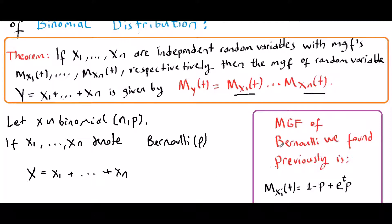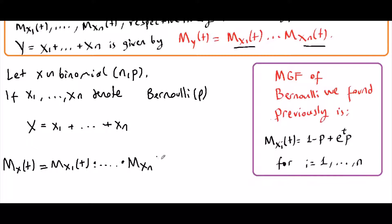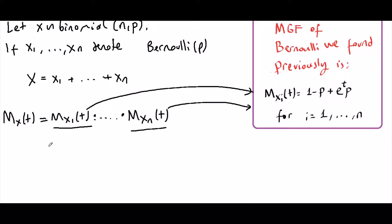Now, we found the Bernoulli random variable's moment-generating function in the previous video of this section. So using the theorem above, we can rewrite the moment-generating function of x as mx1(t) times up to mxn(t). We know the moment-generating function of each xi because they are independent Bernoullis, so we can write (1 minus p plus e^t times p) up to n.